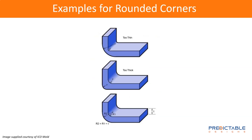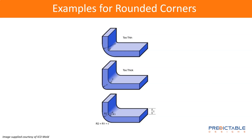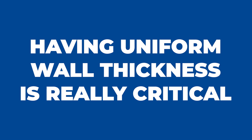Another thing you have to be careful of with injection molding is you can't have corners that are sharp edges — you want them rounded. One reason is it's difficult for the plastic to flow into a perfect sharp corner. The second thing is that when designing a plastic part, you're really designing the mold. A sharp edge is really difficult, if not impossible, to machine exactly correctly using CNC machining, and it increases the mold cost and complexity. But you don't want to round it in a way that creates a thin wall section, because having uniform wall thickness is really critical.